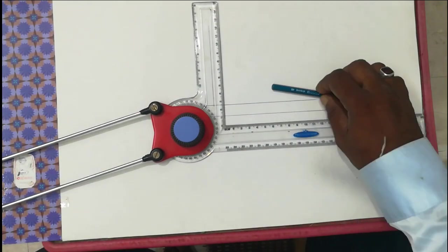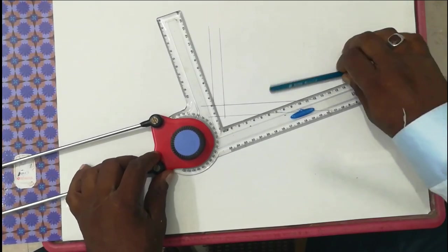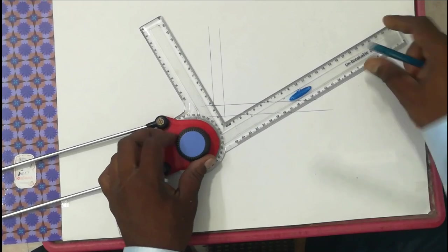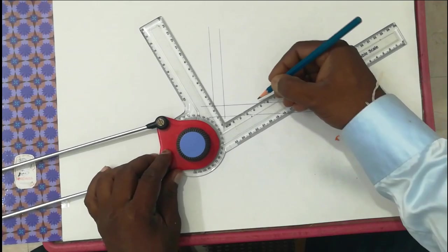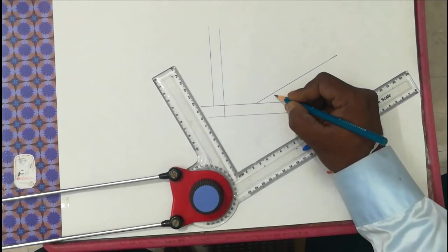Rotate the nut anticlockwise, rotate the scale to release. You can mark 30 degree angles. You can draw inclined lines like this. Now the angle is 30 degrees.